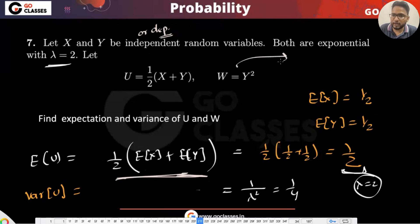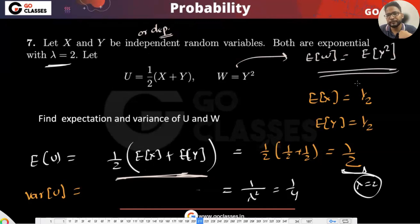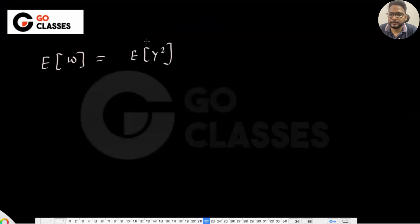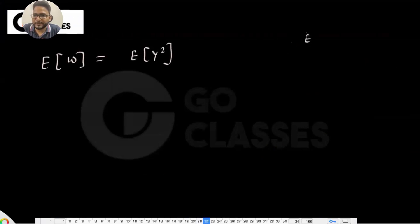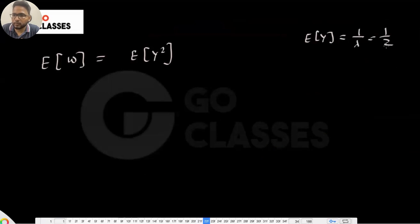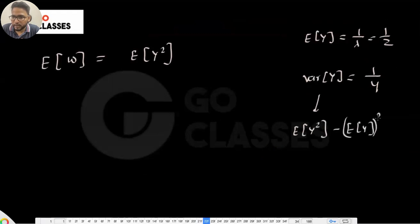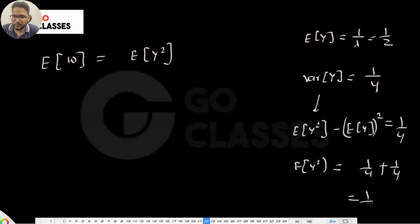Now let's find expectation of W, where W = Y². Expectation of W = E[Y²]. E[Y] = 1/lambda = 1/2, and variance of Y = 1/4. From variance formula: E[Y²] - (E[Y])² = 1/4, so E[Y²] = 1/4 + (1/2)² = 1/4 + 1/4 = 1/2. So expectation of W is 1/2.